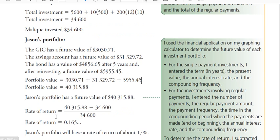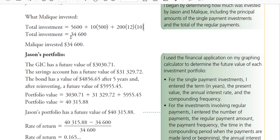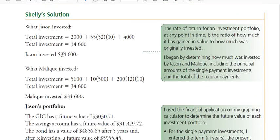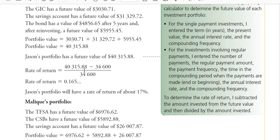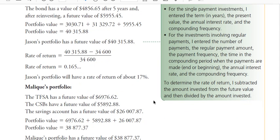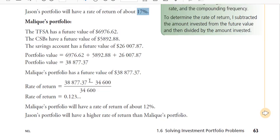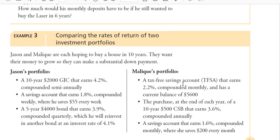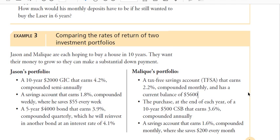One thing we talked about a few sections ago was rate of return. The rate of return is basically what you made. Jason's total amount put in was $34,600. The rate of return is calculated as the amount earned - total portfolio value minus amount invested - divided by the original investment. That's a common way to talk about how well your portfolio is doing. Now I want you to go back to Malik's portfolio and use the TVM solver to get the same numbers the textbook shows - take a couple minutes and work through each part on your own.